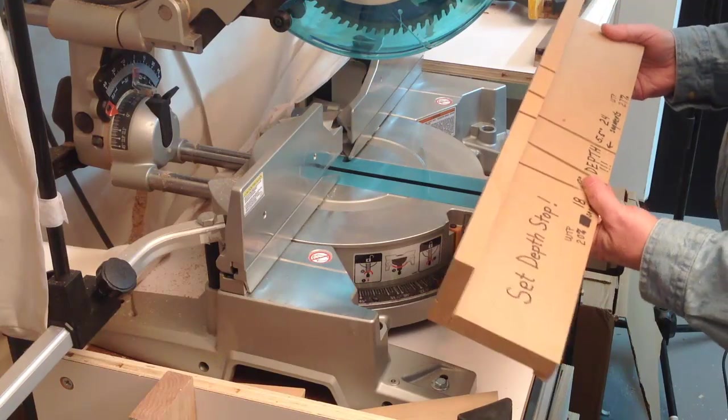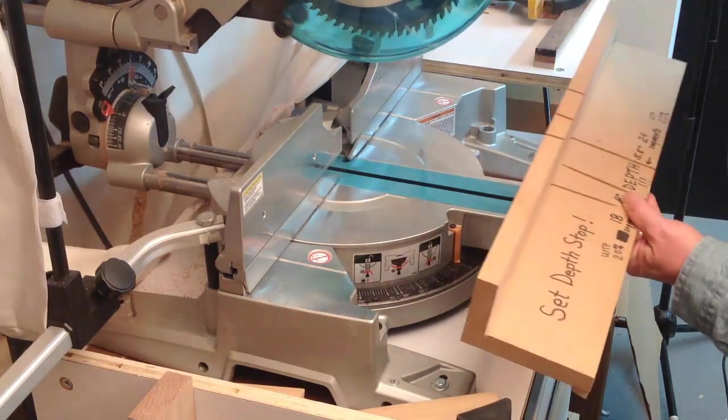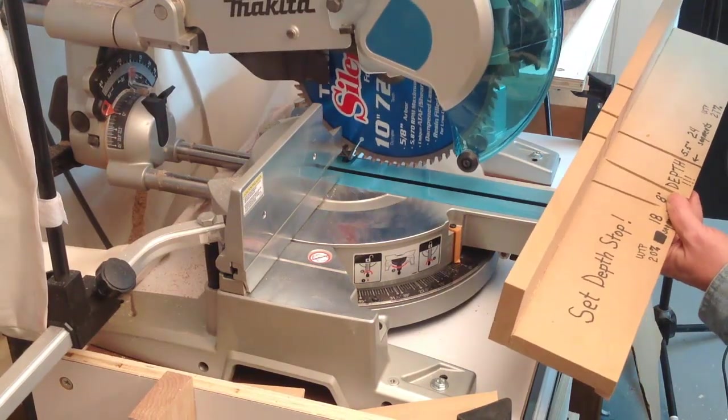At the miter saw, the very first thing we're going to do is set the depth stop. So, now, the deepest that we'll cut is right there.